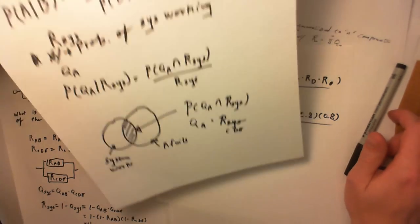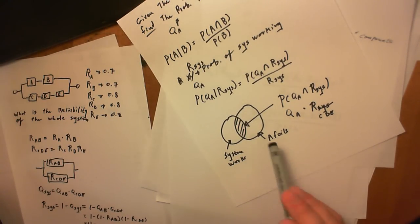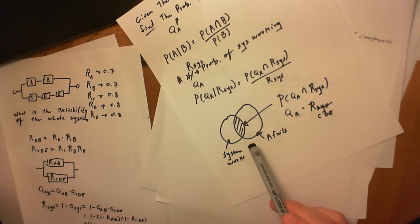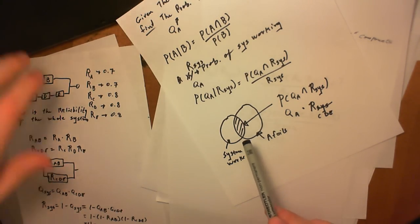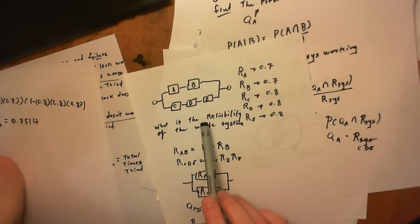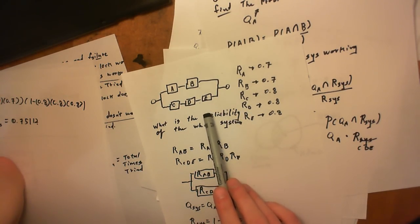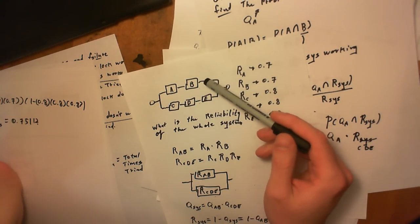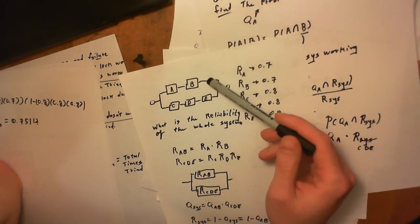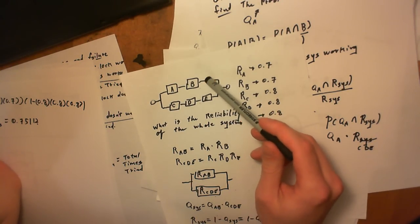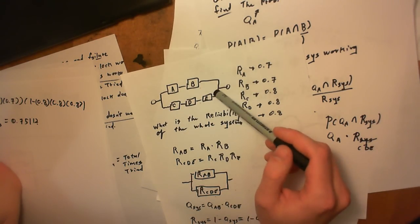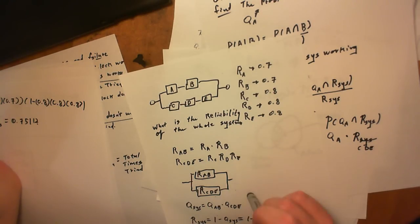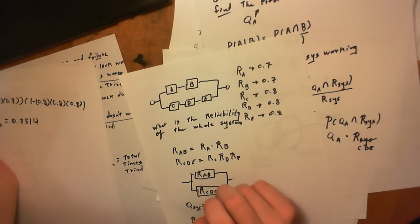The trick in this question is understanding the idea of an intersection — the system only works while A has failed if branch CDE is working. Even if there were another block added in parallel, it still wouldn't factor into this expression because the system only works under that condition if CDE all works.